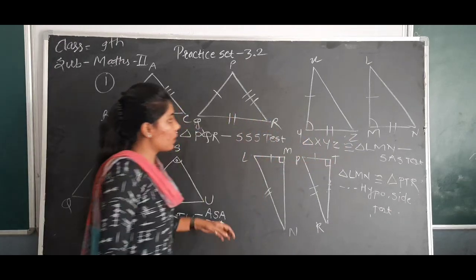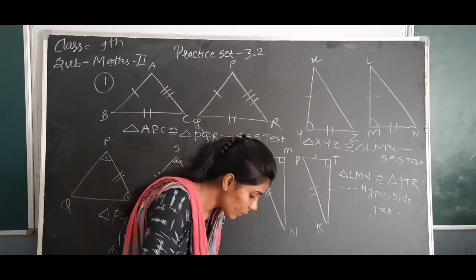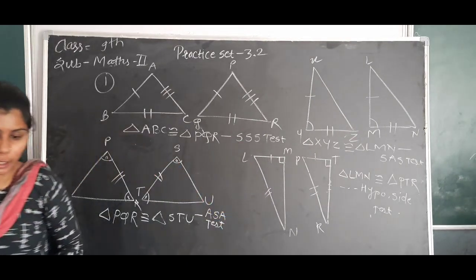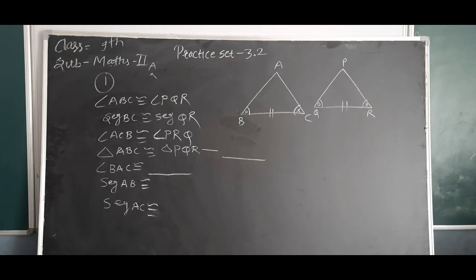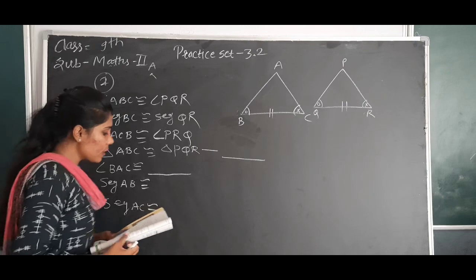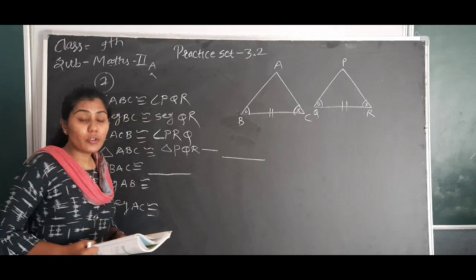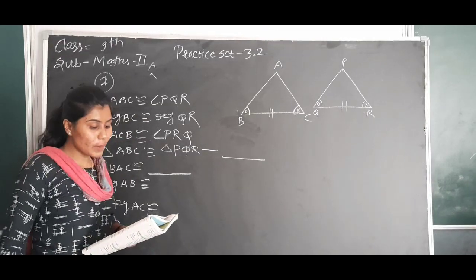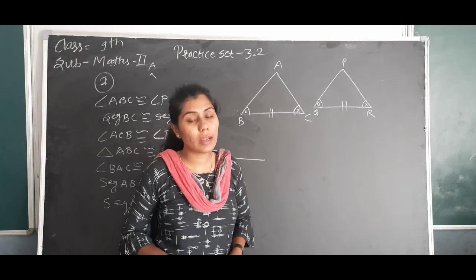First question is done. Now second question: observe the information shown in the pair of triangles given below. State the test by which the two triangles are congruent. Write the remaining congruent parts of the triangles.